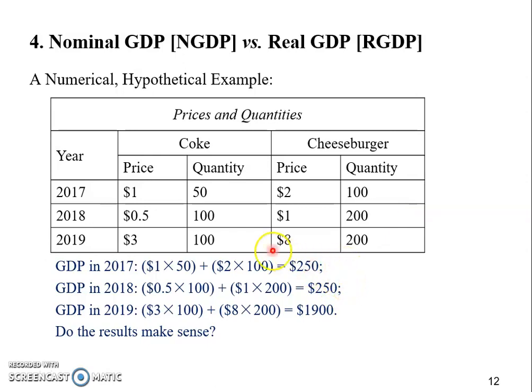Why? Simply because the prices of Cokes and cheeseburgers decreased by 50%, and that decrease in price completely offset the increase in quantities. We find that we're in trouble: we want to measure the quantity, but we cannot add the number of apples on top of the number of airplanes, so we have to use the prices. But the prices themselves are not constant.